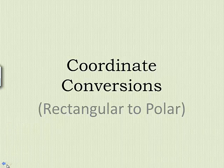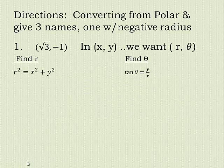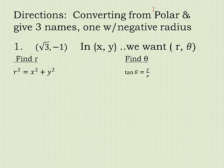Alright, this video is how to do coordinate conversions, but today it's about taking a rectangular coordinate and making it into polar form. So we'll be converting from rectangular to polar, and then you're going to give three polar names, including one that has a negative radius. So here's our rectangular x and y. We want it in (r, θ).